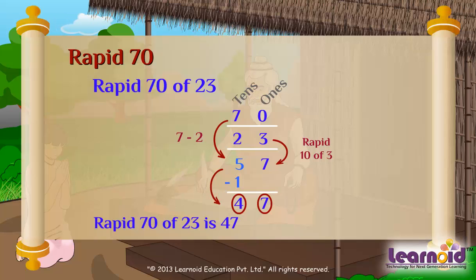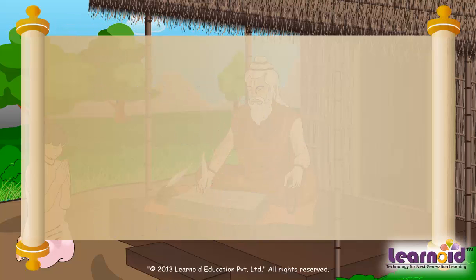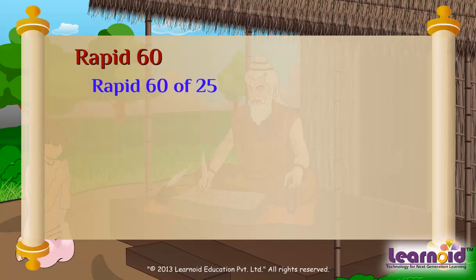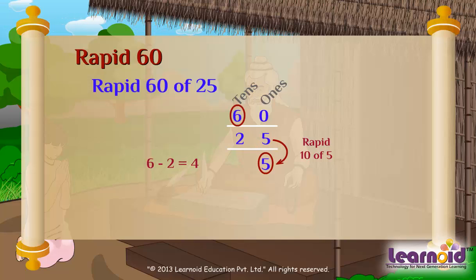Looks easy. Do this mentally now. Rapid 60 of 25. Rapid 10 of 5 is 5. 6 minus 2 is 4, minus 1 is 3. So rapid 60 of 25 is 35.